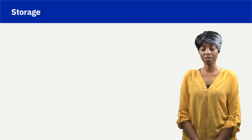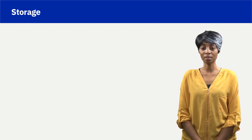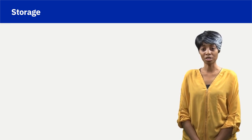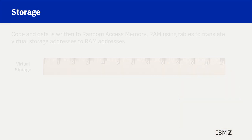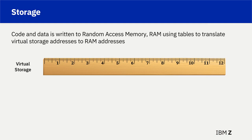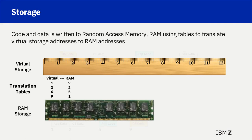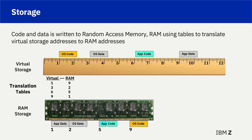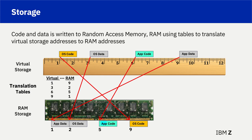One physical resource available to hold the code and data represented by the virtual storage addressing mechanism is random access memory, commonly referred to as RAM. The RAM is segmented or broken down into addressable areas to store operating system and application program code and data. ZOS keeps track of the mapping between virtual storage address and RAM storage addresses using translation tables.